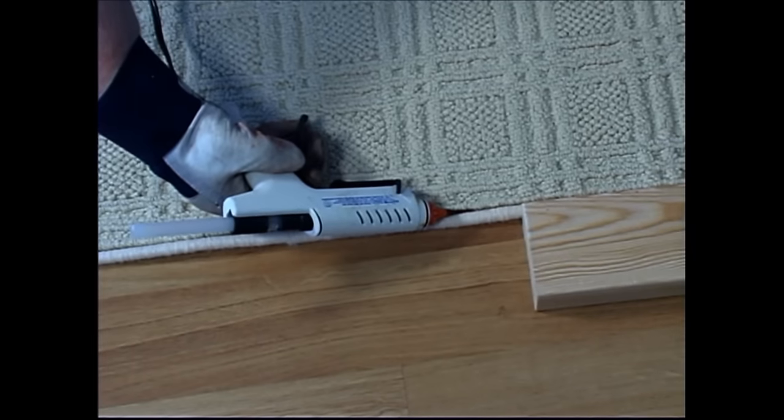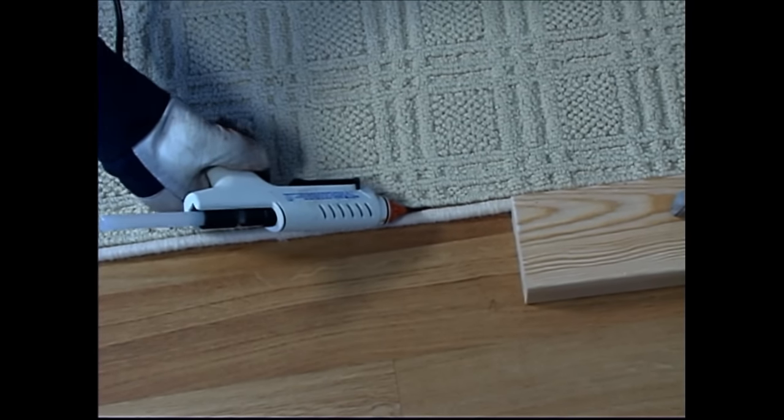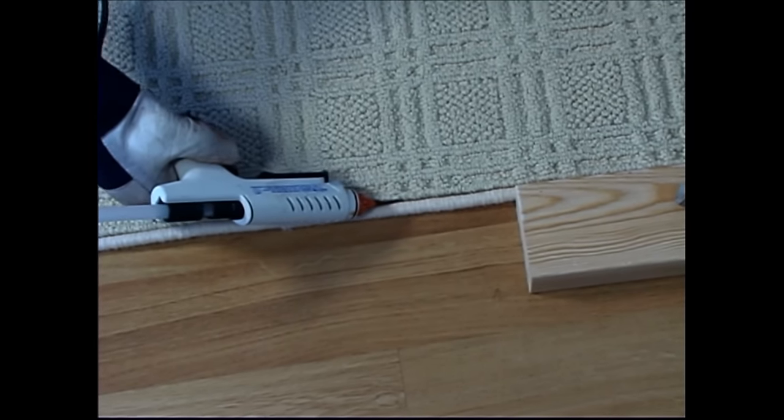You can also use a piece of wood as a pressure guide behind the application of glue for a quick and easy bond.